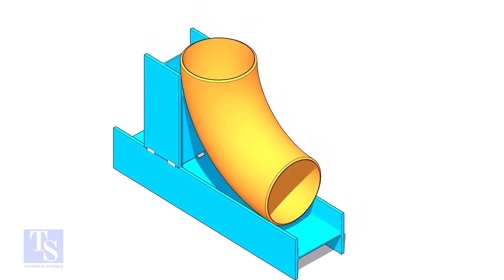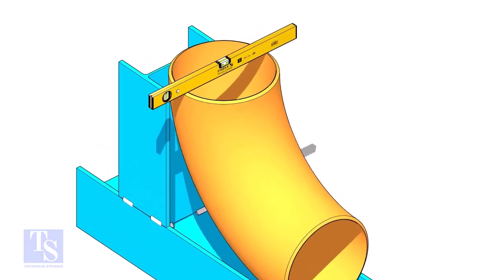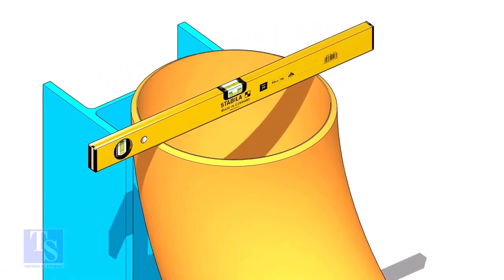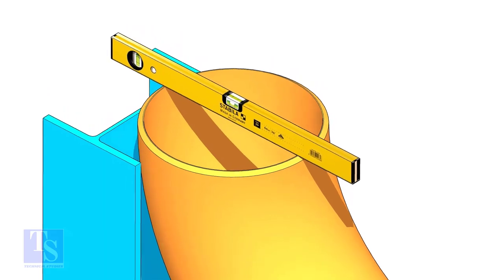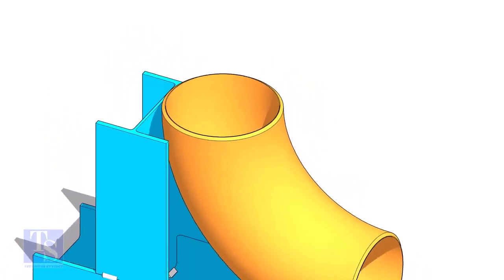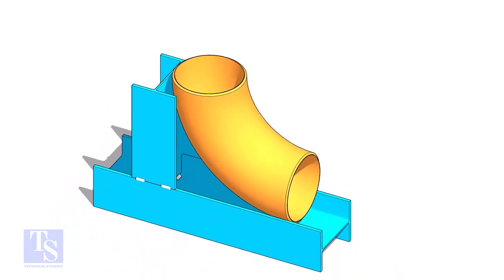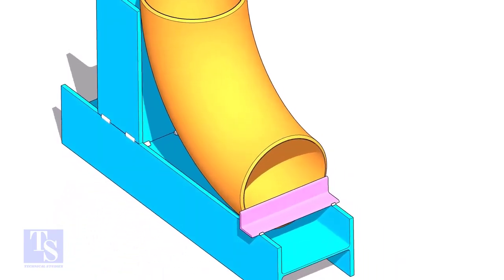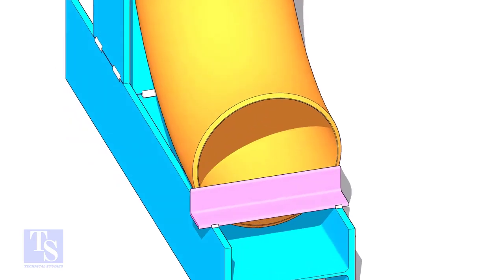Put the elbow in the jig. Level the top face of the elbow on both ways. Tack weld a piece of angle bar or a piece of a plate at the bottom side of the jig to arrest the elbow.